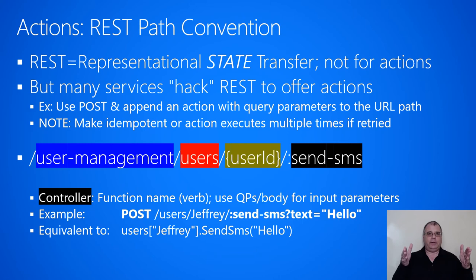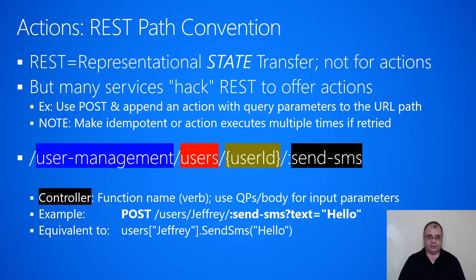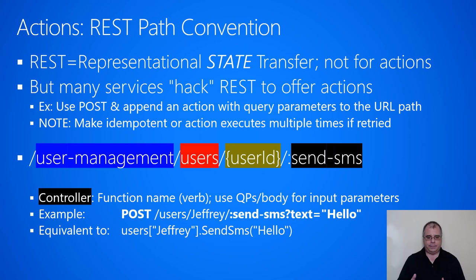After we've identified on the URL the resource that we wish to perform the action on, you then put at the end of the URL a slash, colon, and then the name of the action. In this example, I'm using send SMS. This part is frequently referred to as the controller, and it's usually a function name that is a verb because this is performing some kind of action. In this example, I'm doing a POST to the users collection, to the identifier Jeffrey, and then with the slash colon I want to send an SMS to Jeffrey.